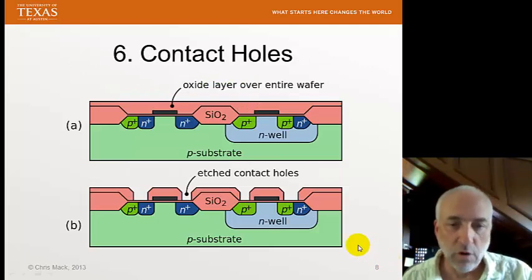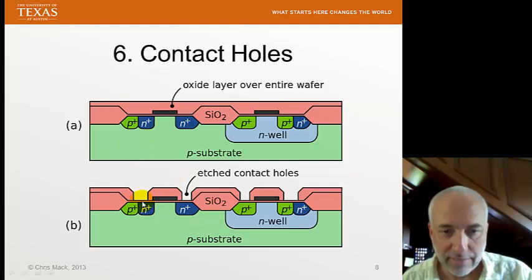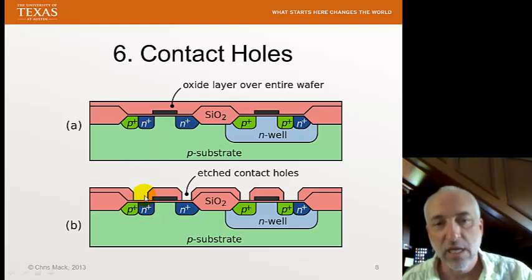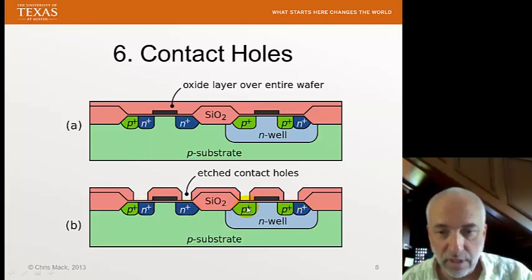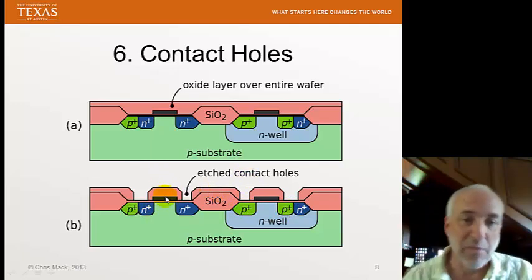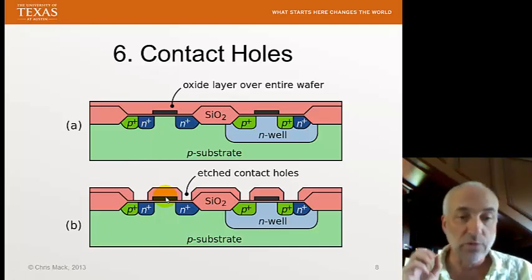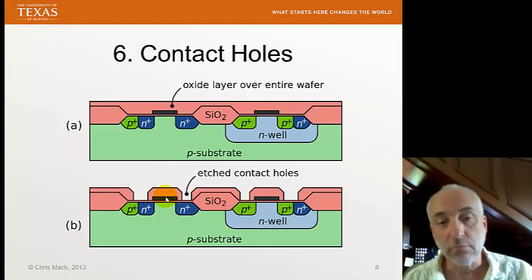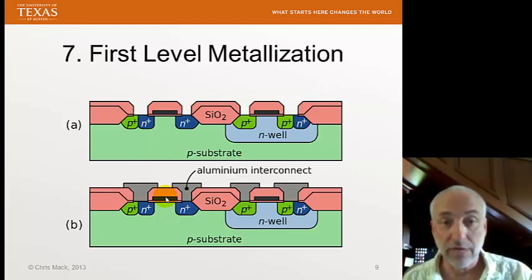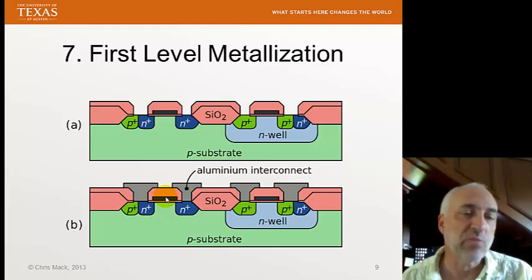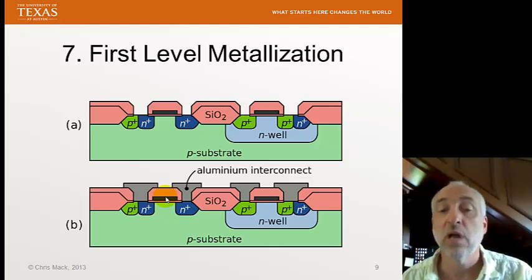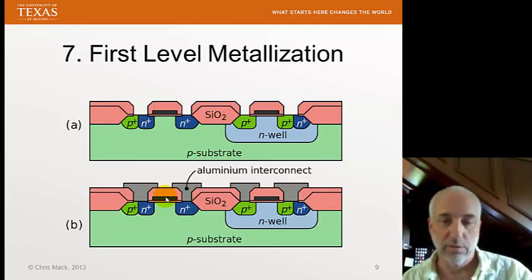We're going to make contact holes. Generally, we would form a salicide compound that improves the contact resistance. Then we'll deposit oxide over everything, do a lithography step to put holes in this oxide, so now we have contact holes making contact with the source and drain of both devices. Also not shown — because they'd be in the third dimension — will be contact holes making contact to the gates as well. We're going to fill these contact holes with metallization. A more modern process today would fill up these contact holes with a tungsten plug and then use copper to interconnect or wire up the transistors.